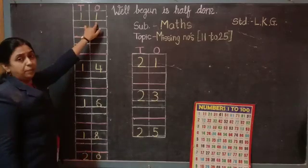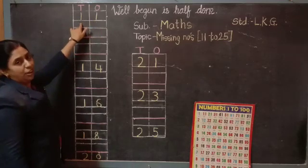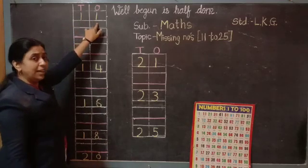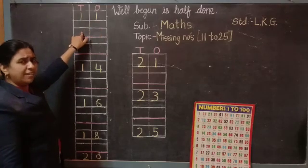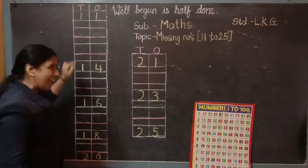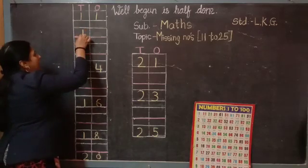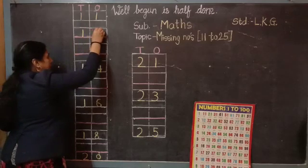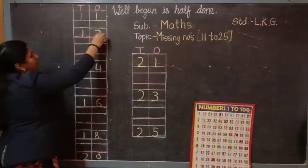Which number is here? Yes, 1-1, 11. Which number is not here? Which number is missing? Yes, 1-2, 12. Number 12 is missing.